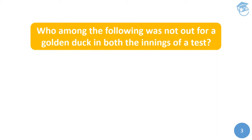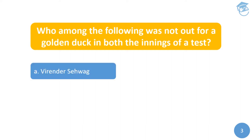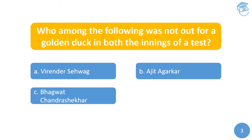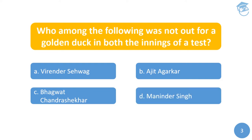Next question: Who among the following was NOT out for a golden duck in both innings of a test match? Options are: A) Virender Sehwag, B) Ajit Agarkar, C) Bhagwat Chandrasekhar, or D) Maninder Singh.